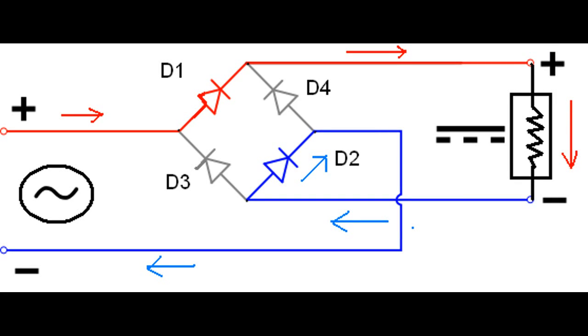During the first half cycle, the upper end of the transformer secondary is positive with respect to the lower end. During this time, the diodes D1 and diode D2 are forward biased and D3 and D4 are reverse biased.